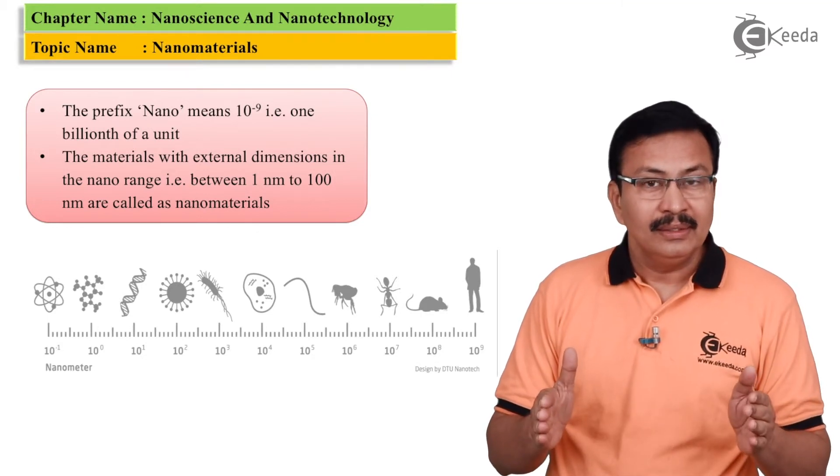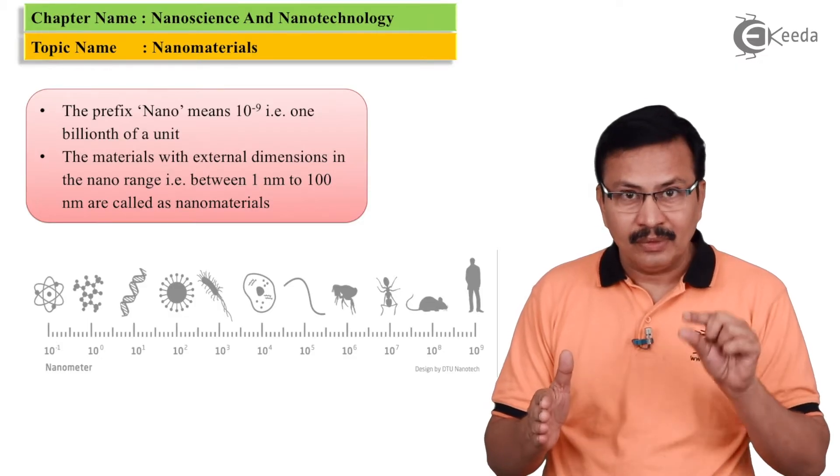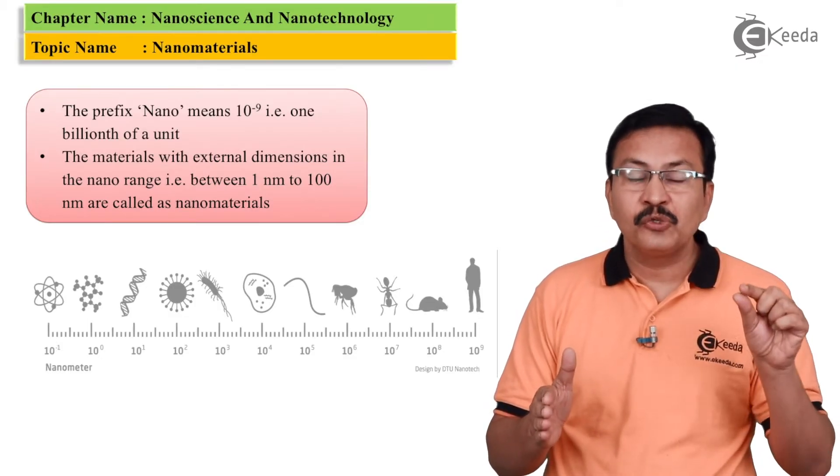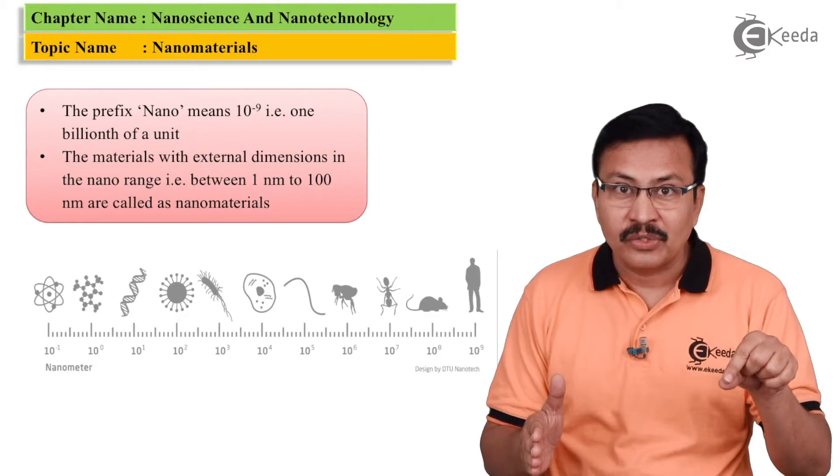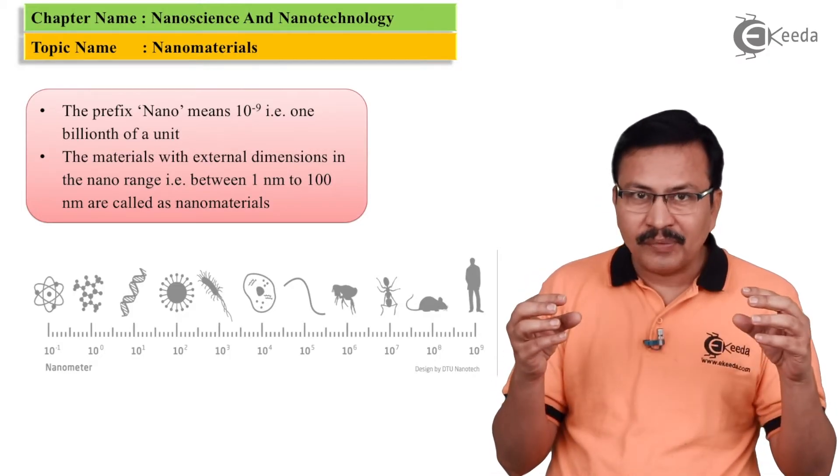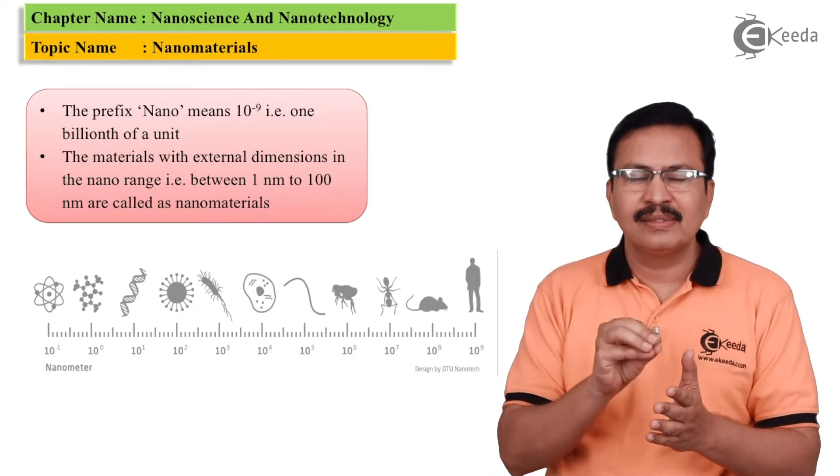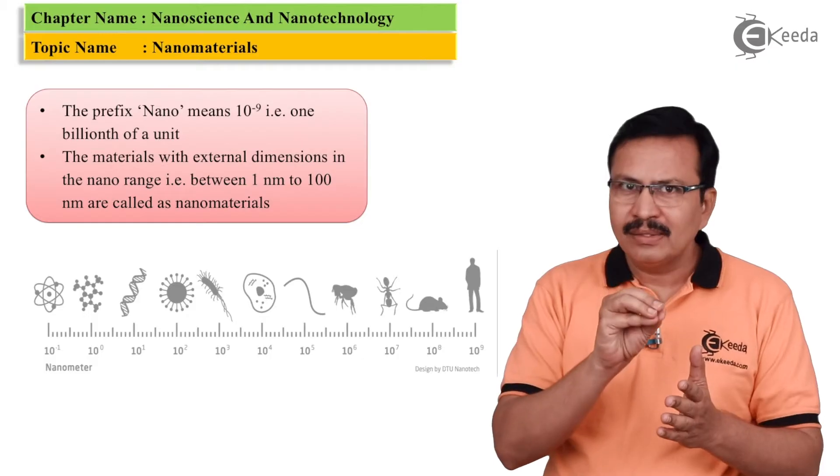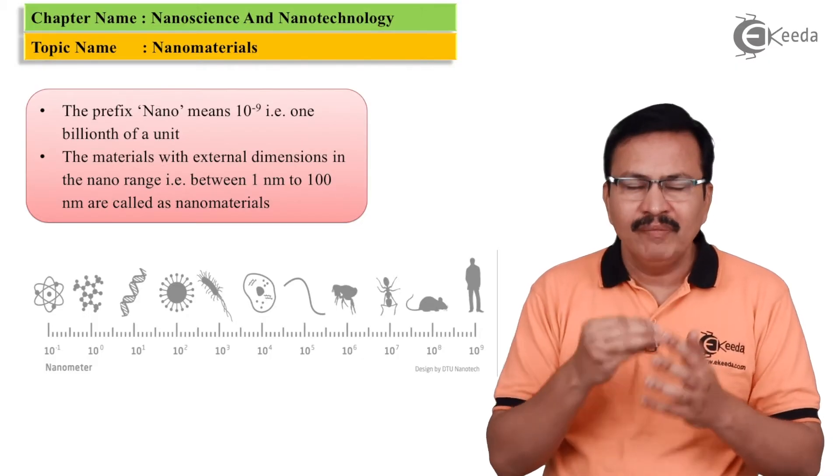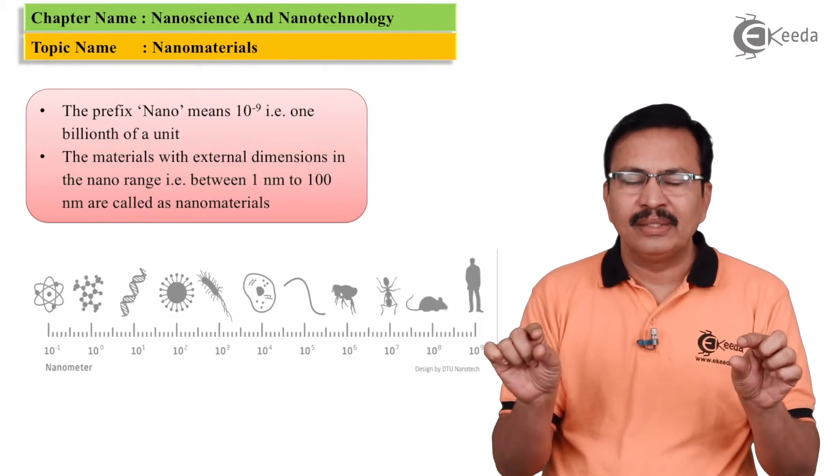At the other end the dimensions of an atom is 10 raised to minus 1 nanometers or 1 angstrom. And intermediate between them, this is for your comparison, we have various particles as well as living objects that correspond in the nanometer scale.